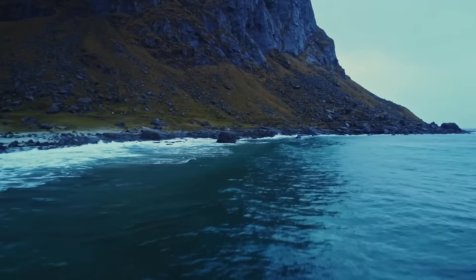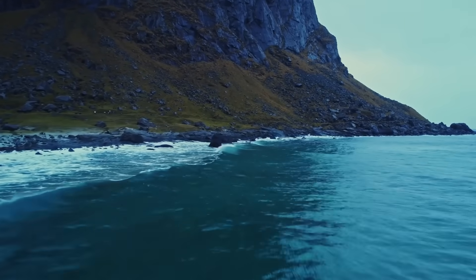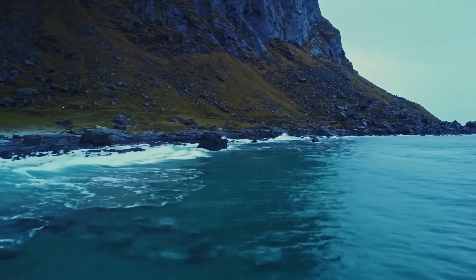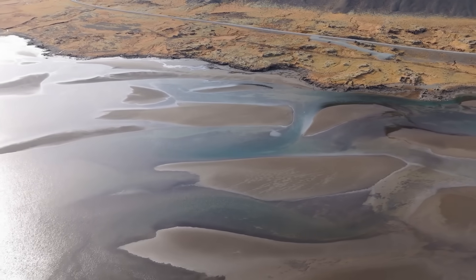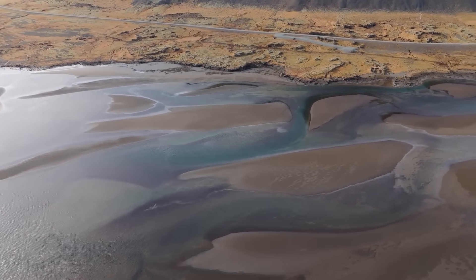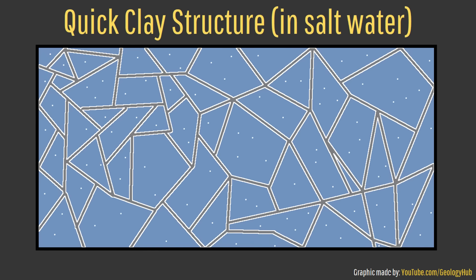Quick clay originally formed from long-term weathering of other rock types, depositing fine particles primarily in shallow ocean environments. As that clay bound together due to flocculation, it formed fine crystals that rapidly widened as sea salt ions glued them together in a house-of-cards type structure. This trapped within the clay an unusually large amount of salt water, which would remain for long periods of time. So long as the salt bond remained, what would otherwise be an unstable mass remained fairly stable.